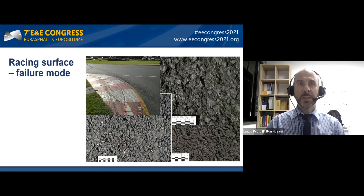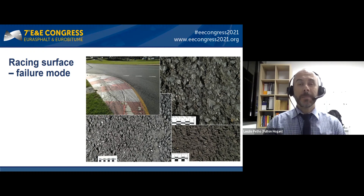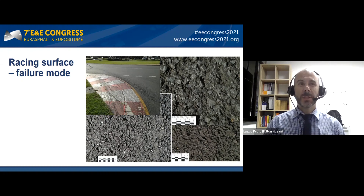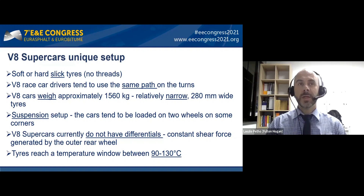With racing surfaces, the predominant failure mode is the loss of mastic and the loss of aggregate. Once you start seeing this during the race, it won't take long until the whole surface disintegrates. Unfortunately in the past, race events running on national television had to be stopped, which is a pretty big stress on the organizer. There is a lot of scrutiny around designing asphalt mixes for race conditions.